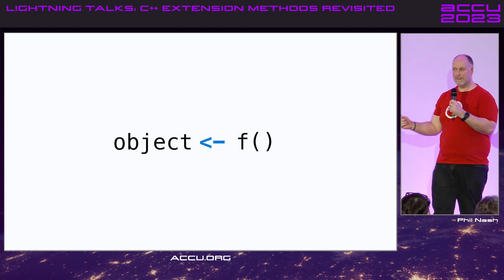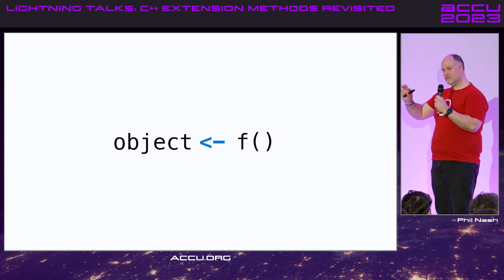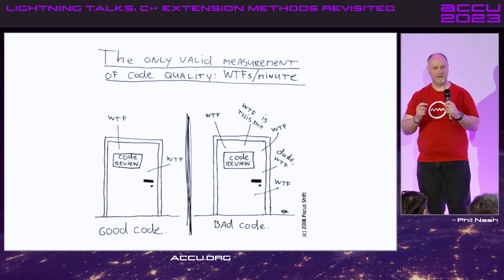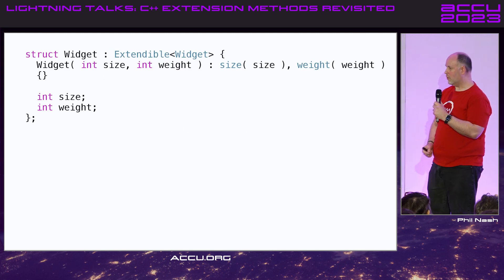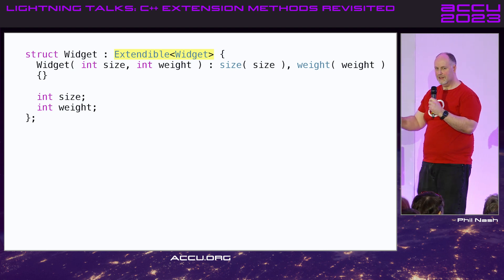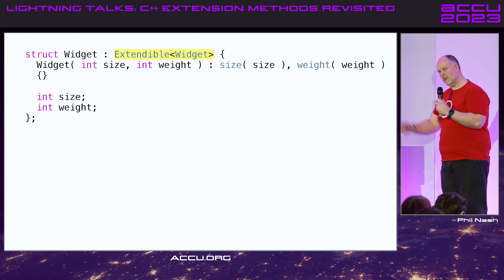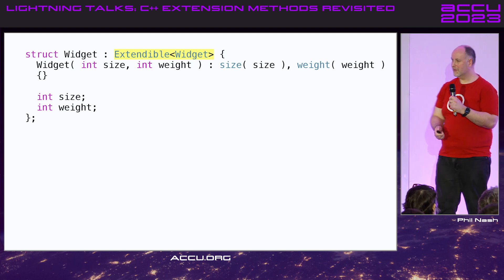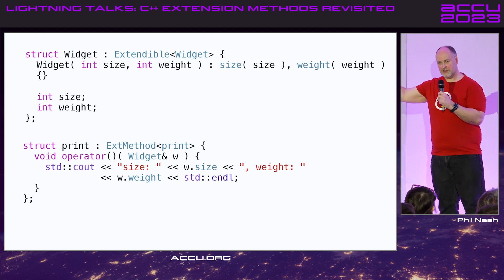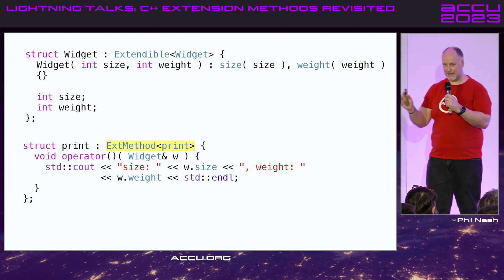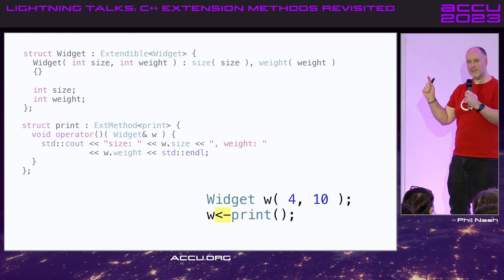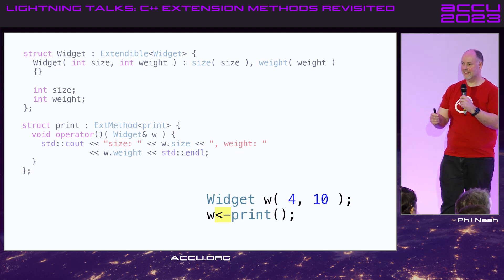What if you could use the left arrow operator and that would bind to something new? Well, we can't do something like that in C++, can we? Let's take this class — called it Widget — and if you derive from this extendable base class, which is a CRTP template, it means you pass the derived type down to the template argument. Don't need to do that in C++23, but I haven't updated these slides for 10 years. And then if you want to add a new member function, you put it in a new class or struct, which itself derives from ext_method — also CRTP — and you put the body of the function in a call operator. And if you do that, you can then use the left arrow operator to call that member function.